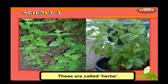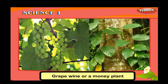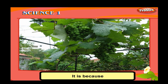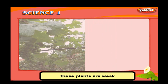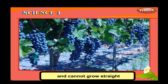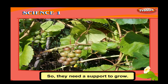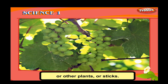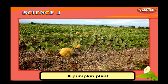Grapevine or a money plant do not grow as other plants do. Do you know why? It is because these plants are weak and cannot grow straight on their own, so they need a support to grow. These plants climb up taking the support of walls, other plants, or sticks. These are called climbers.